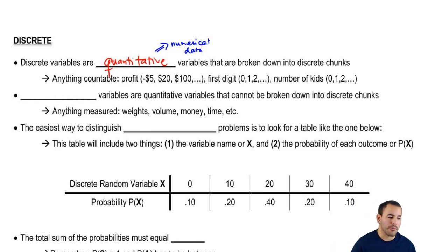The next one is continuous variables. So continuous variables are quantitative variables that cannot be broken down into discrete chunks. These are things that are measured. For example, weights. So weights, you don't weigh just 1 pound or 2 pound, there's something in between. You can weigh 1.7, 1.2953. So these things cannot be broken down into discrete chunks. Another one, volume - for example how much water you're drinking, money, how much money you're making, time that you spend doing something. You don't just spend 1 second or 2 second, there's something in between that too.